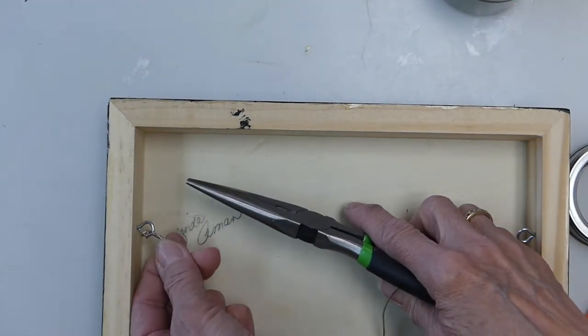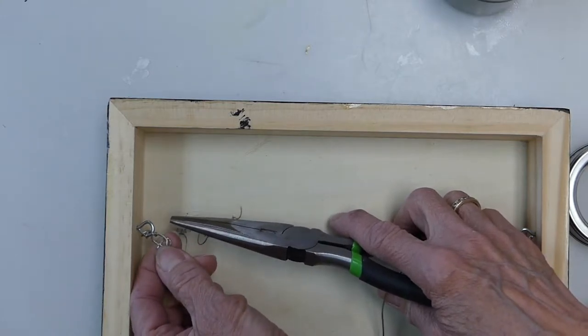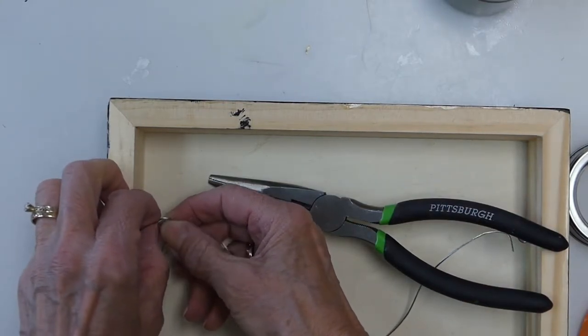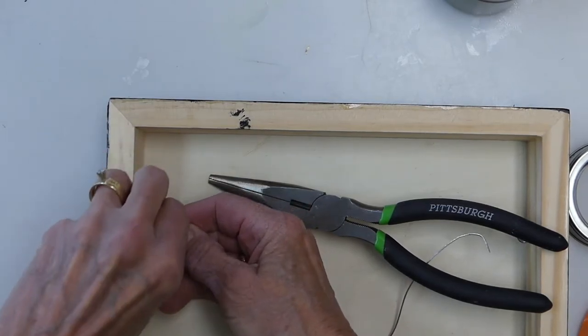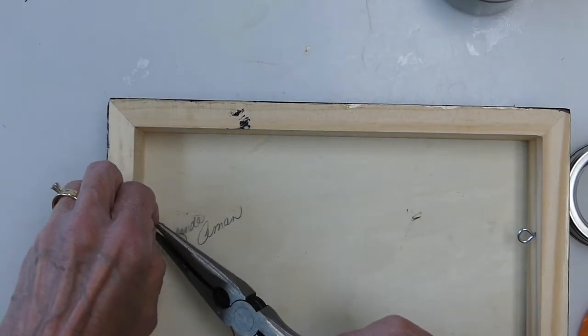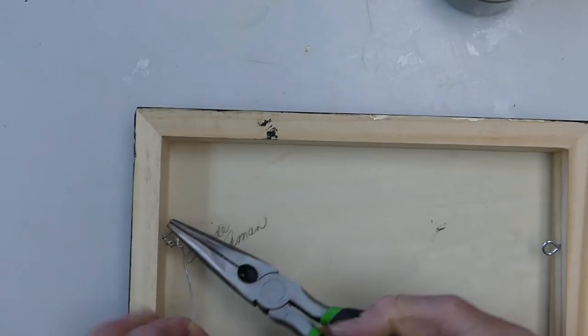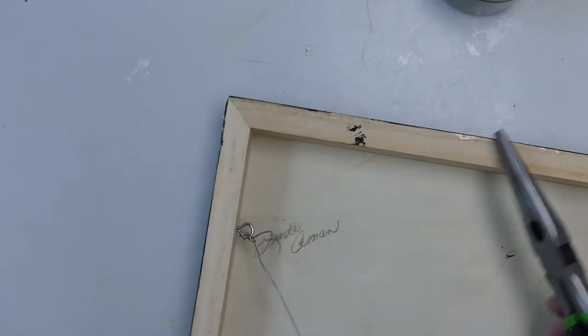Getting that through here. And what happens is when you use the pliers you're able to be a lot tighter with it. And then I'm going to stretch it straight across. You don't want to have any bow in the wire.